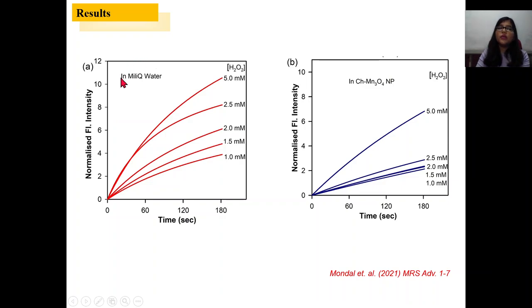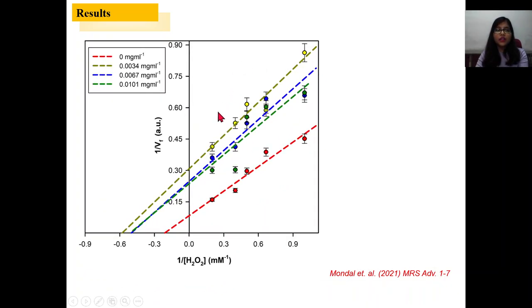So what we have done? We have taken Milli-Q water at increasing concentration of H2O2 and you can see the ROS production is increased. Whereas when we put our nanoparticle in the Milli-Q water and increase the concentration of H2O2, you can see that the ROS production is hindered here. And we have calculated the buffering capacity from this graph where we have put one by ROS production rate versus one by oxidant concentration.